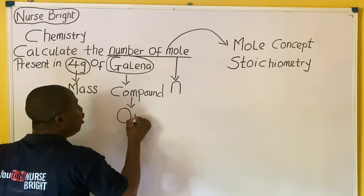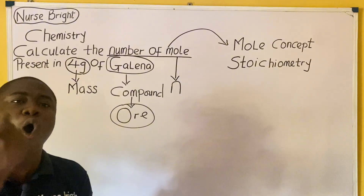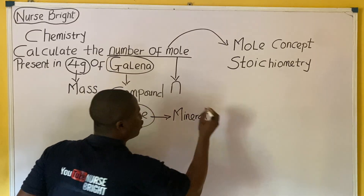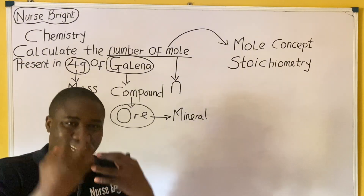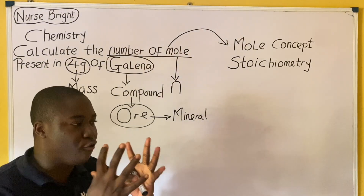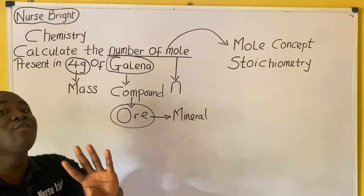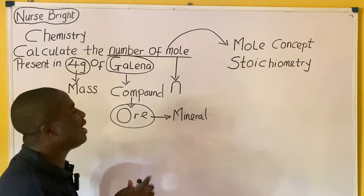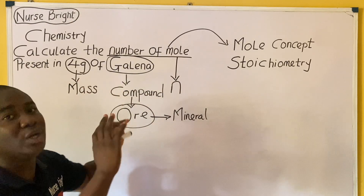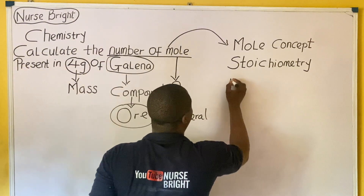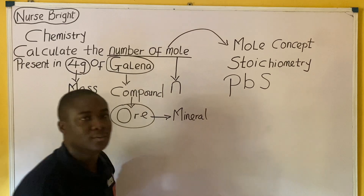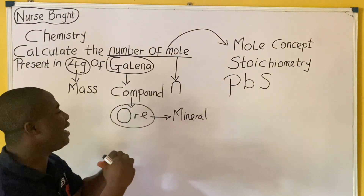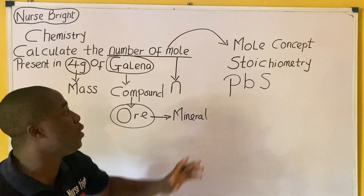Specifically, galena is an ore. Ores are minerals from which metals can be extracted for useful purposes. Galena is an ore — a mineral for a particular metal. The chemical formula of galena is PbS. Pb is lead and S is sulfur, and lead is the metal. So galena, being an ore, is a mineral from which this metal — lead — can be extracted.